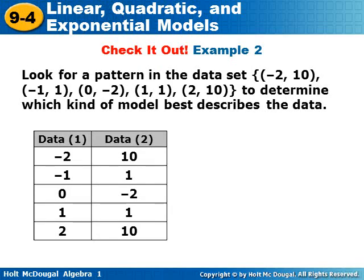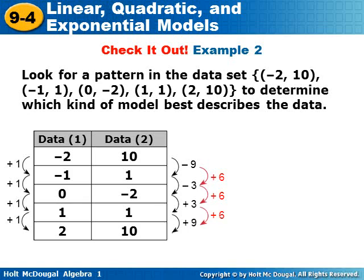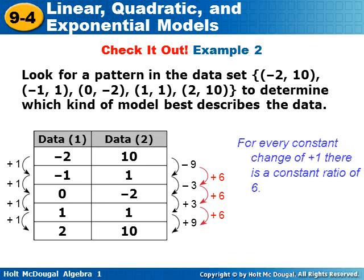Look for a pattern in the set of data: (−2, 10), (−1, 1), (0, −2), (1, 1), (2, 10), to determine which kind of model best describes the data. Try this one on your own, then check back for your answer. You check for a constant change in x values — it's plus one every time. Then you check the y values: the first differences are not the same, but the second differences are the same — plus six every time. So the data appears to be quadratic, since the second differences are constant.